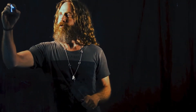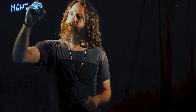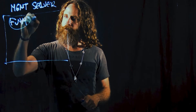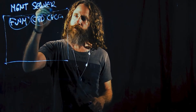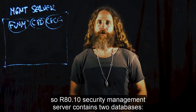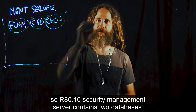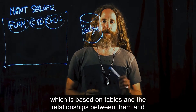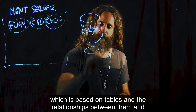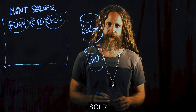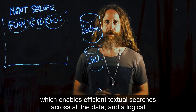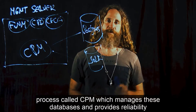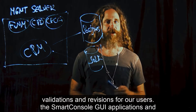Let's see how this works. R80.10 security management server contains two databases: Postgres, which is based on tables and the relationships between them, and Solar, which enables efficient textual searches across all the data, and a logical process called CPM, which manages these databases and provides reliability, validations, and revisions for our users.